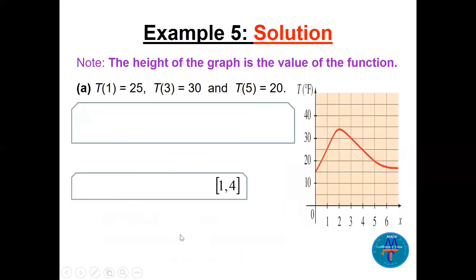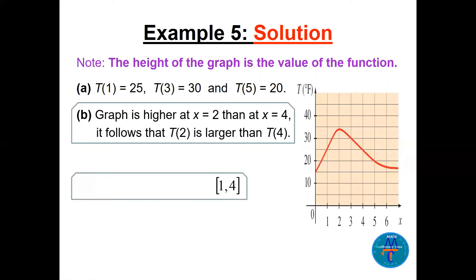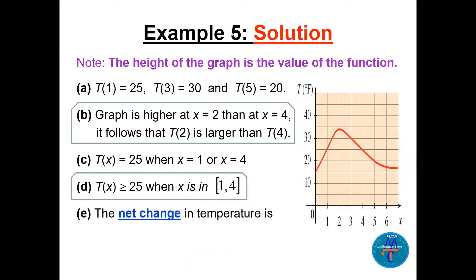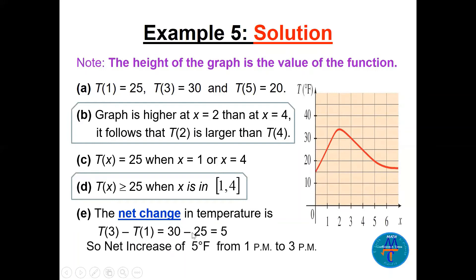The net change formula is f(b) − f(a), so t(3) − t(1) = 30 − 25 = 5 degrees. We also note that t(x) = 25 when x = 1 or x = 4, meaning two times can share the same temperature. And t(x) ≥ 25 on the closed interval [1, 4].